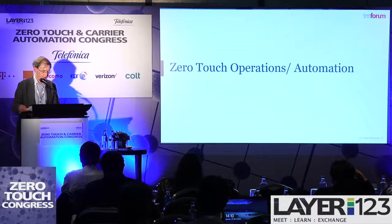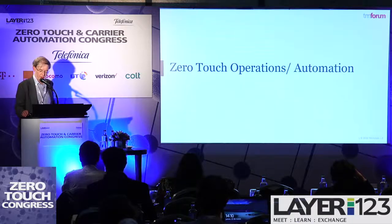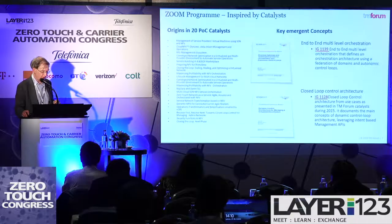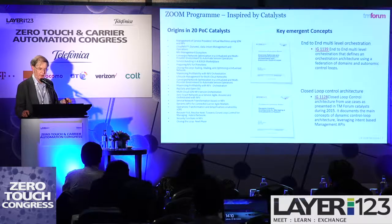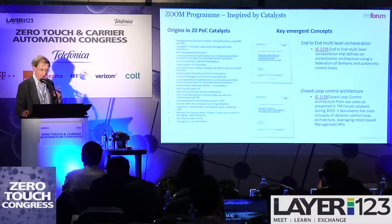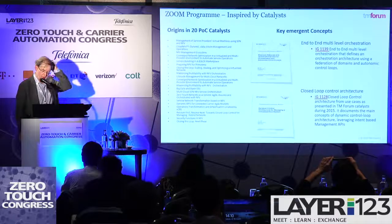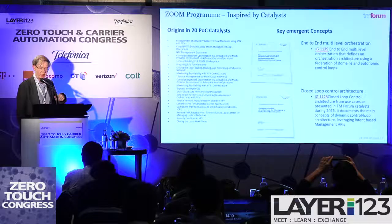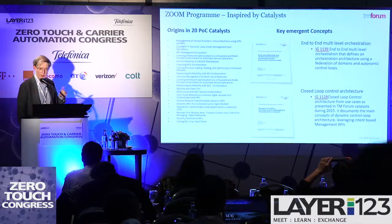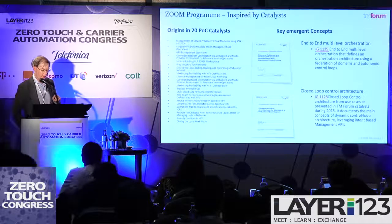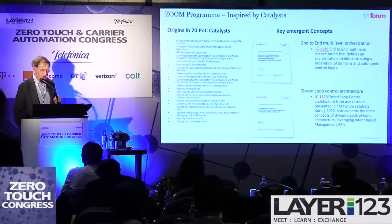Moving on to zero-touch operations and automation: we started this work at the end of 2014 and ran 20 catalysts over 2015. Out of that, two really important concepts emerged. One was in a document called IG1139 — most of our IG documents will become publicly available within the next month or so — about end-to-end multi-level orchestration, defining an orchestration architecture using federation of domains and autonomic closed control loops.